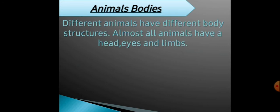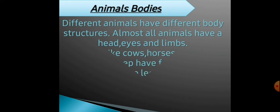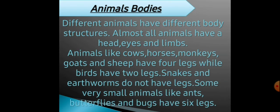Our next topic is animal bodies. Different animals have different body structures. Almost all animals have head, eyes and limbs. Animals like cow, horse, monkey, goat, sheep — unko four legs hote hain, aur birds ko two legs hote hain. Snakes and earthworms do not have legs, kyunki woh creeping karte hain.